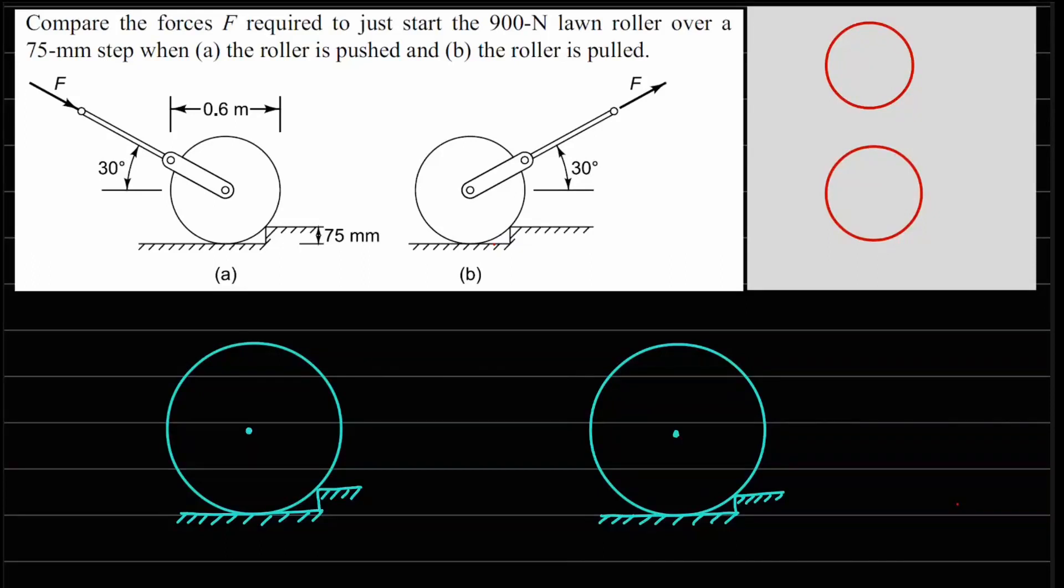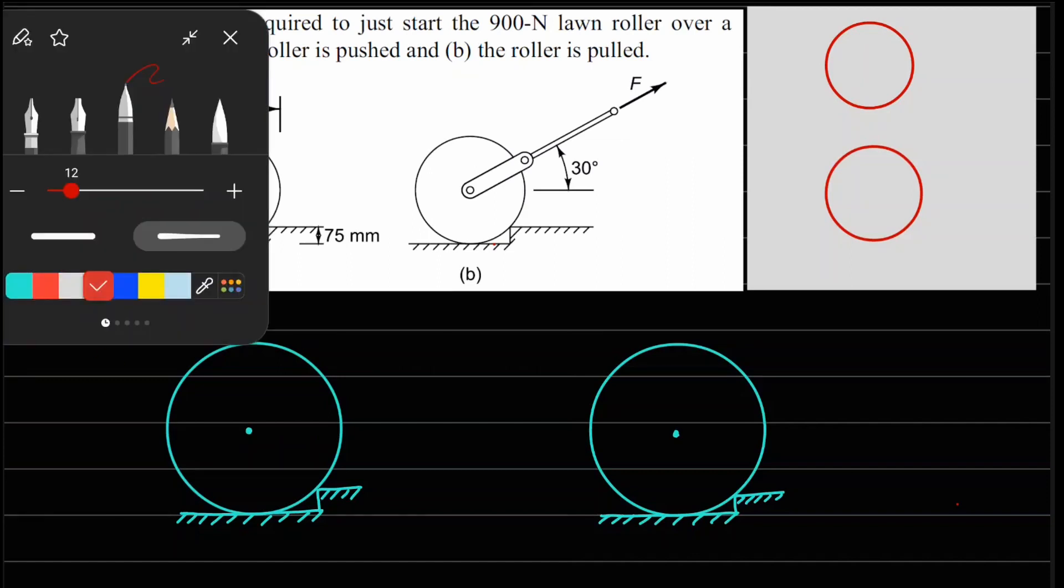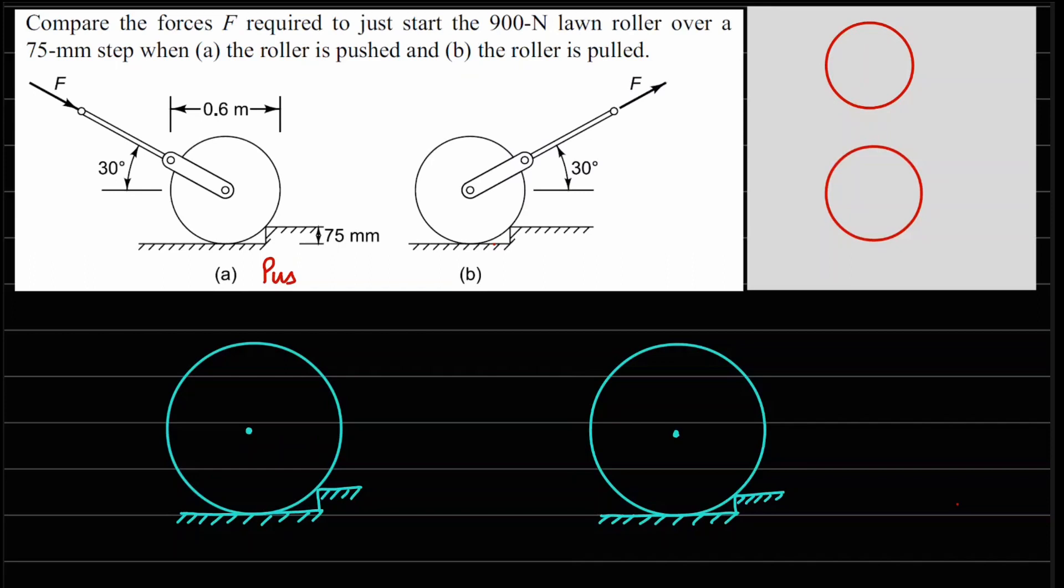This one is problem 1.13. It says compare the force F required to just start the lawn roller over a 75 mm step when the roller is pushed and when it is being pulled. So there are two cases here: the first one is for pushing it and the second one is for pulling. The important keywords here are 'just start' - what happens when we have the rolling motion just starting.